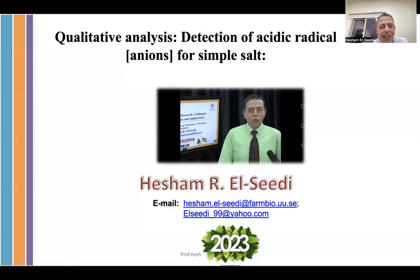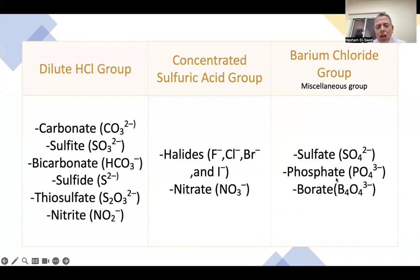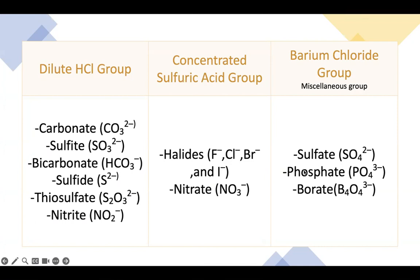Dear all, it is my great pleasure and honor to be with you. This is an important subject in analytical chemistry — qualitative analysis, detection of acidic radicals (anions) for simple salts. This course is taught for the faculty of science, pharmacy, faculty of veterinary medicine, etc. I hope it will be useful for you. Let us see how we can work on analytical chemistry and the detection of anions.